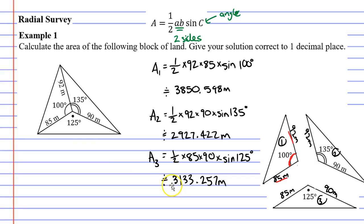So I've got my three areas of my three triangles. It wants the area of the whole block of land. So I need to add these up. When I do this I usually do A with a T below it standing for total area. So I'll add these up.